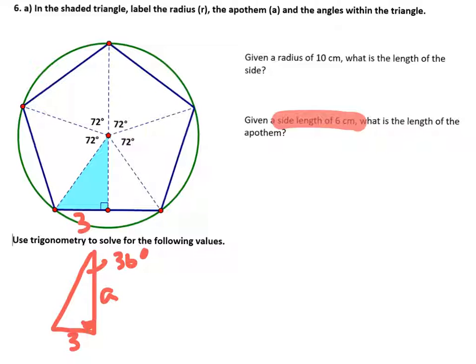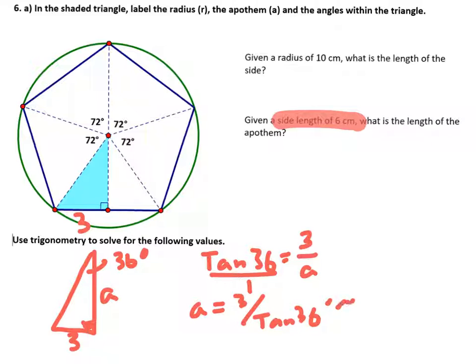So I think we're going to use tangent here. The tangent of 36 is 3 over A. Now, you would have learned already, but this simplifies out to basically be 3 divided by the tangent of 36, which is approximately 4.13, approximately.